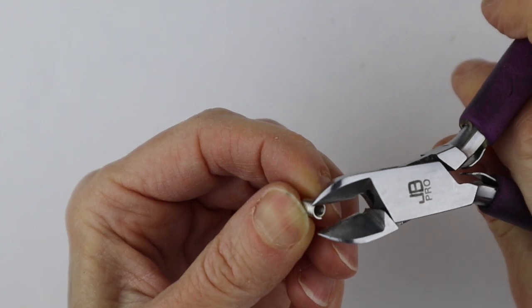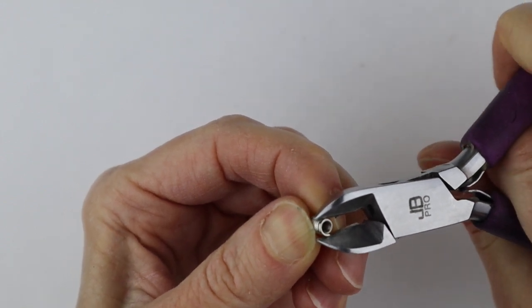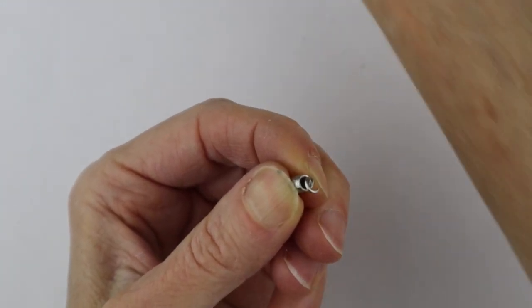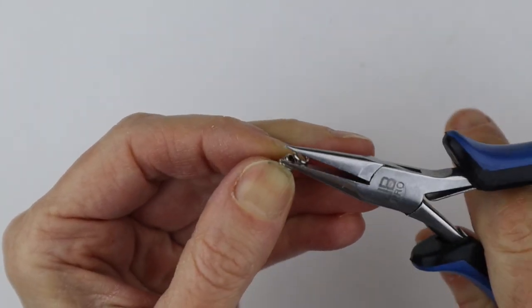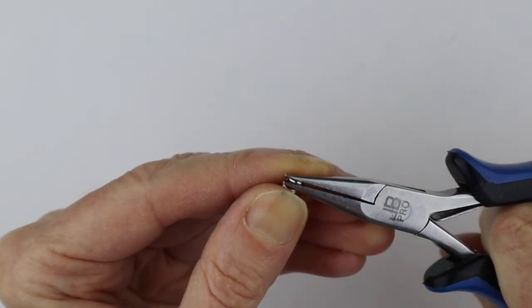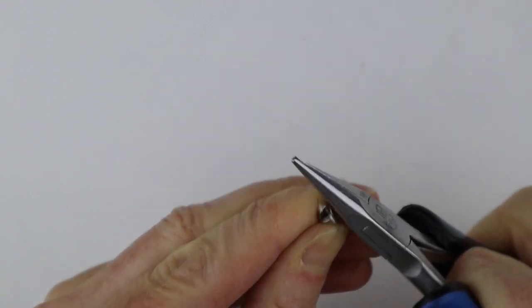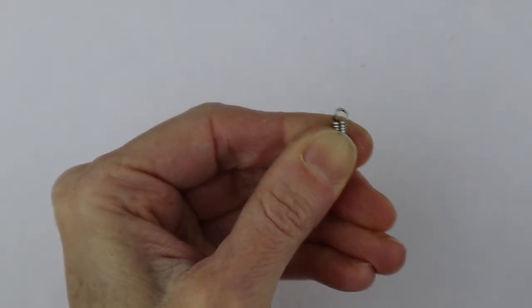Then I take my flat pliers and I just bend it a bit on an angle. So what you have is the spring with the loop on the end.